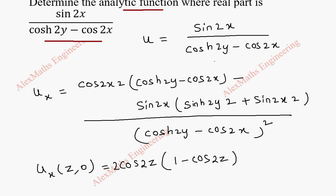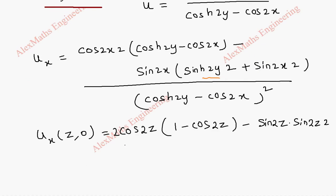Again coming to this, this part will become 0 because sin 0 and the remaining terms will be minus sin 2x, 2z now into sin 2z into 2.